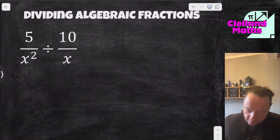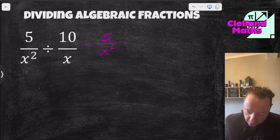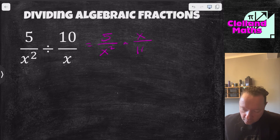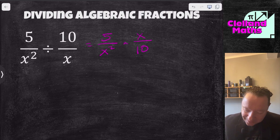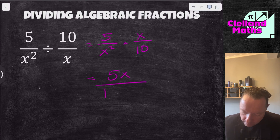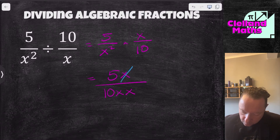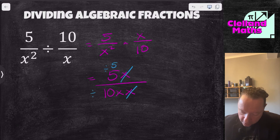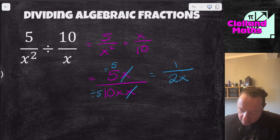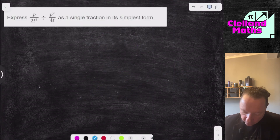Another dividing example — same trick. Change it to a times: 5 over x squared times x over 10. Writing it as one fraction: 5x over 10x squared (i.e., 10xx). Cancel an x with an x, then divide top and bottom by 5: 1 on the top and 2x on the bottom. Answer: 1 over 2x.